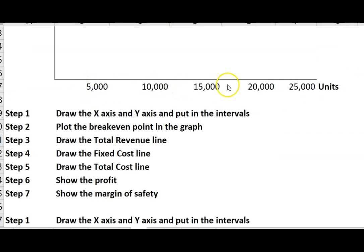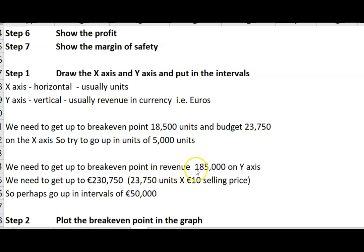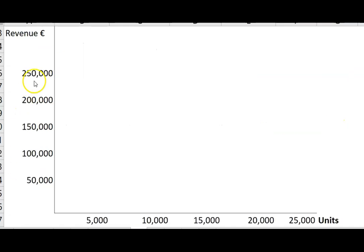I've just put in the units there, 5, 10, 15, 20, 25. Our budget activity is somewhere here, our breakeven point is somewhere in between. 18,500 is around here. You can ideally be using graph paper. If not, use rulers. It doesn't have to be exactly correct, as long as you show you understand it. Next, the Y intervals. On the Y axis, our breakeven point in revenue is 185,000. Budgeted activity times selling price is 230. So go up in intervals of 50,000.